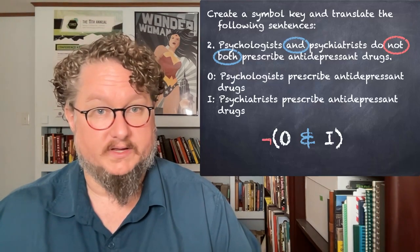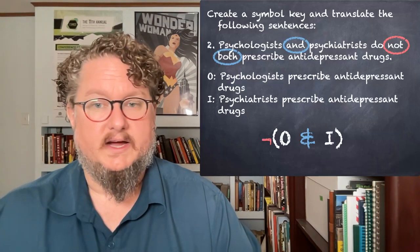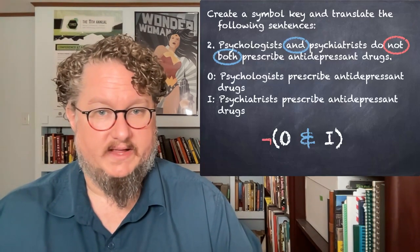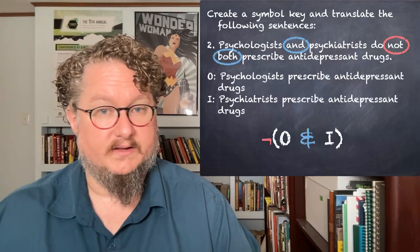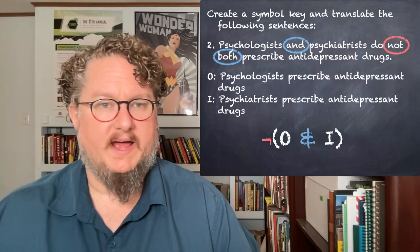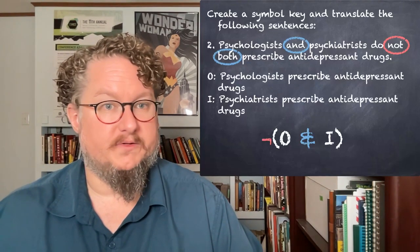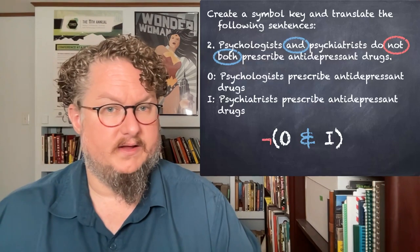The not is our main connective — it applies to the conjunction inside. The other way we might translate is 'not-O and not-I,' but I don't think that's what the sentence is saying. Under that translation, it's possible that one or the other could still prescribe, and I think the negation-over-conjunction is the right way to go.